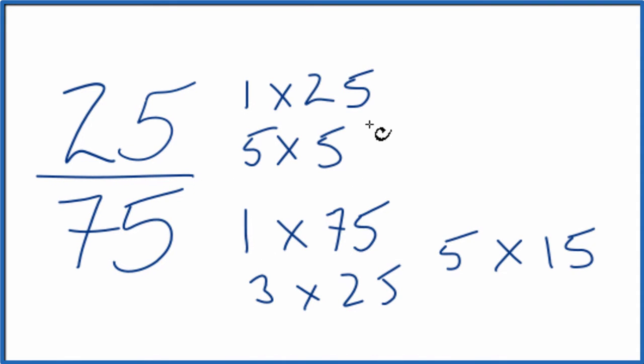So I look at the factors of 25 and 75 and I see the greatest common factor. There's 5 and 5, but we also have 25 and 25. So if we divide 25 by 25 and 75 by 25, we'll have simplified 25/75.